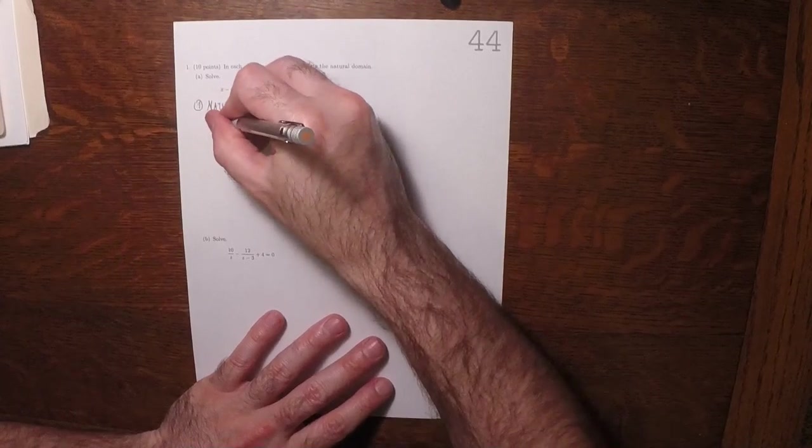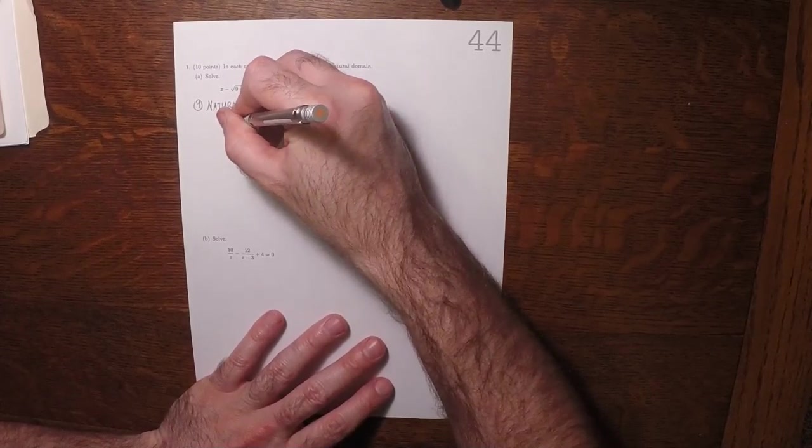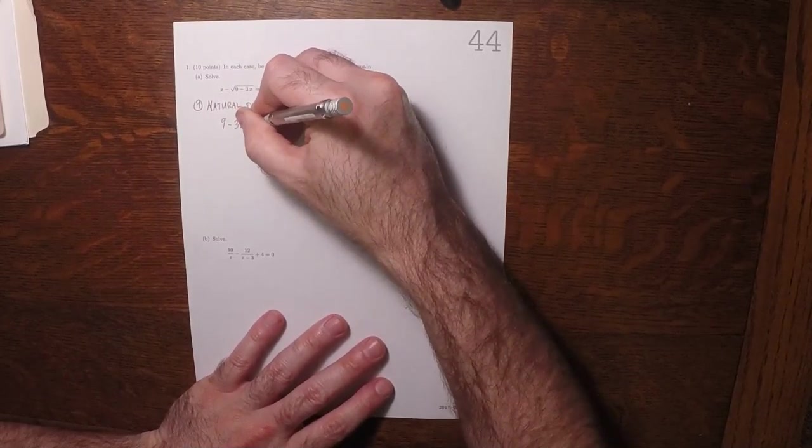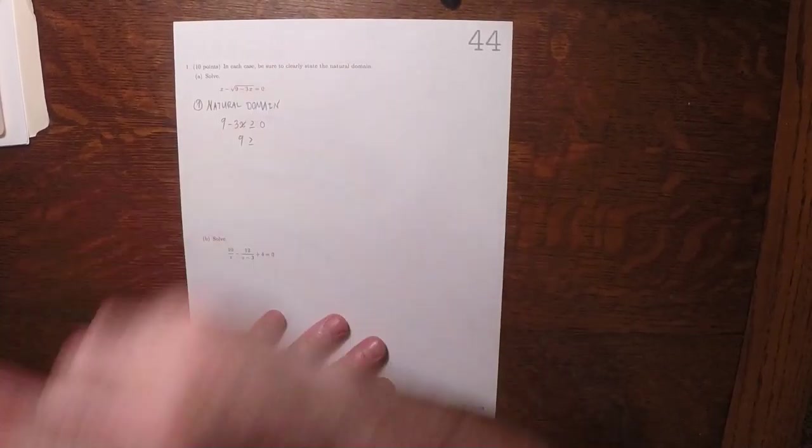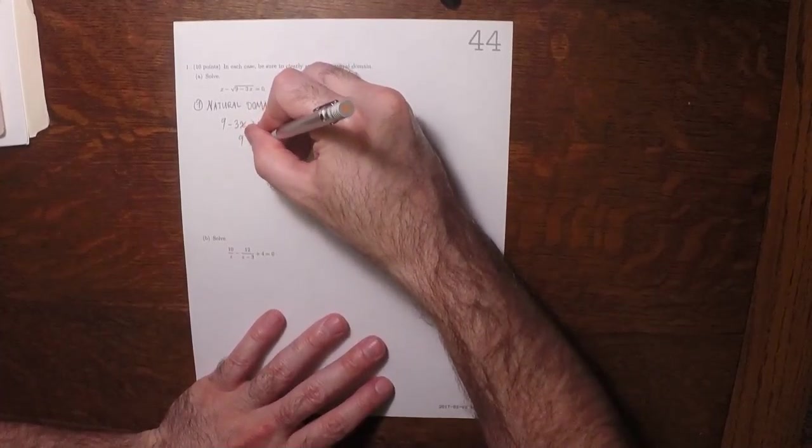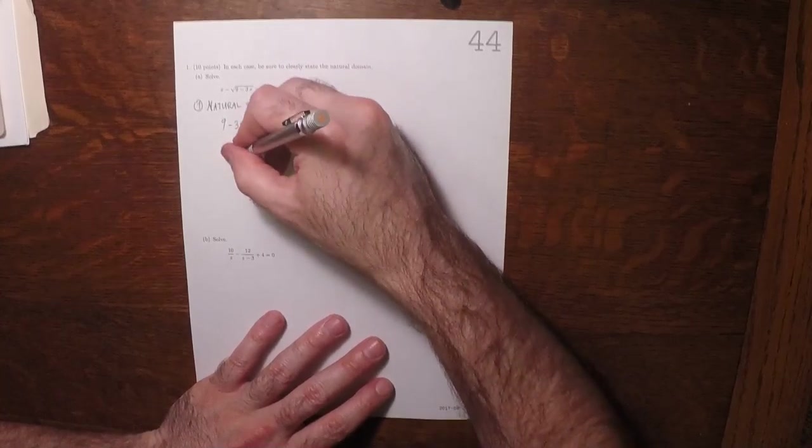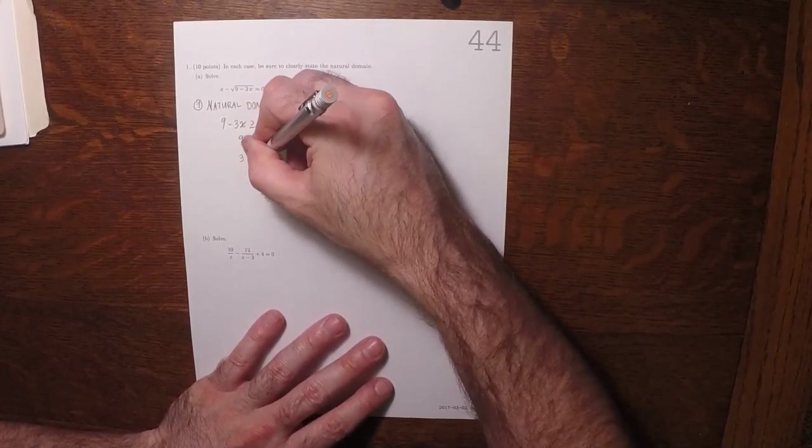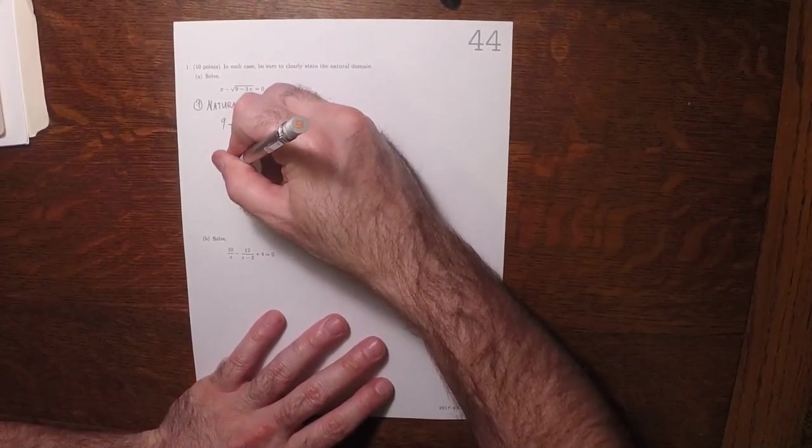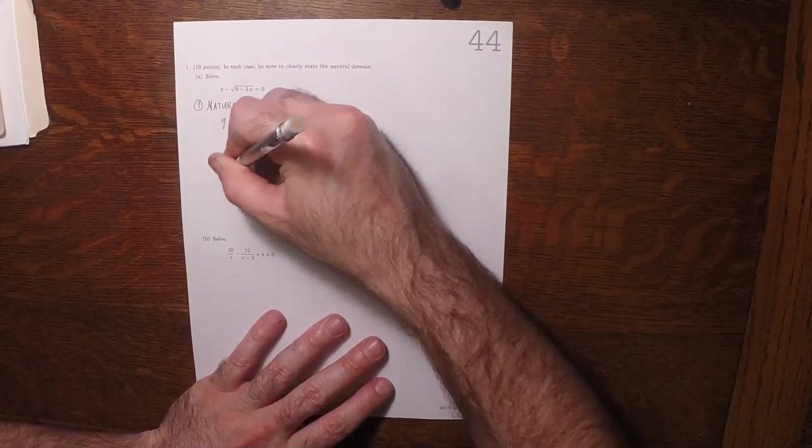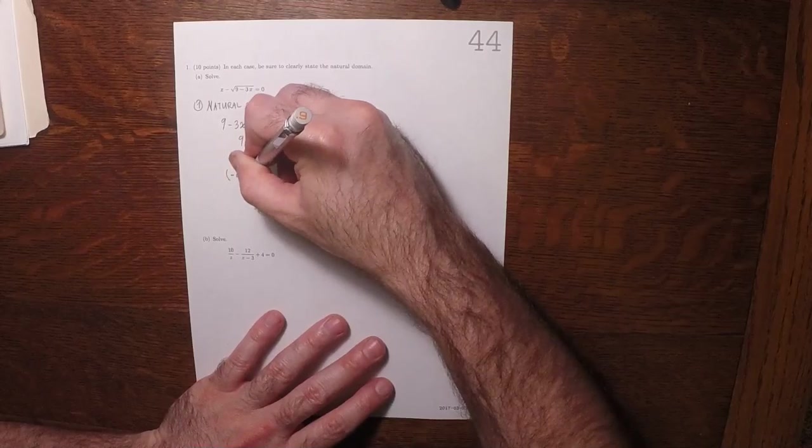The only restriction is that the argument to the radical has to be non-negative. So 9 is greater or equal to 3x. So 3 is greater or equal to x. That means that the natural domain is negative infinity to 3.